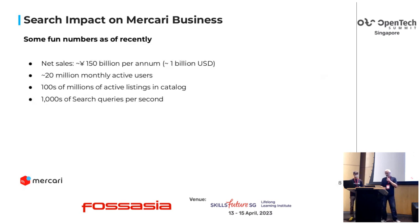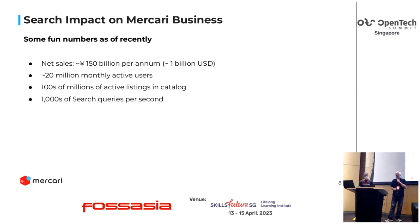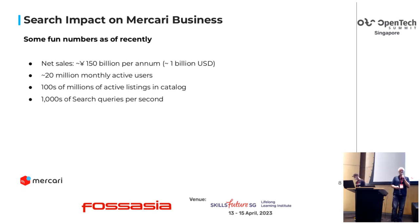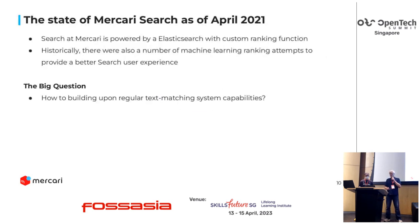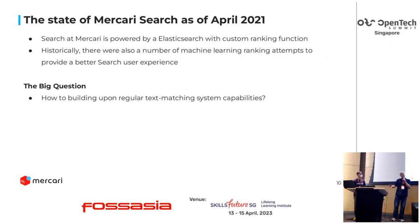A bit about the numbers: we have about 150 billion yen — that's about 1 billion US dollar per year — in net sales, 20 million monthly users, hundreds of millions of active listings. We have thousands and thousands of search requests per second, so that is the dimension we are speaking about. When Alex joined in April 2021, the state of search was just basic — we threw the search query with a bit of tricks at Elasticsearch and got results back, which were then displayed to the user.